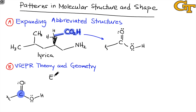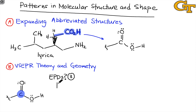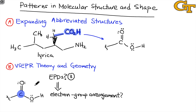Electron pair domains — also called electron domains or charge clouds — are regions of space where electrons reside. Each double or triple bond counts as a single domain, as do pairs of non-bonding electrons and single bonds. Focusing on this carbon, we can see there are three electron pair domains around it. By applying VSEPR theory, we go from that number of electron pair domains to what I call the electron group arrangement — the arrangement of electron pair domains around the central atom in space. With three domains, the electron group arrangement is trigonal planar.